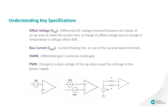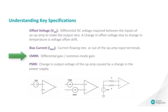There are a few specifications that are very important for precision applications. Offset voltage is the differential DC voltage which, when applied between the op-amp inputs, will make the output zero. A change in offset voltage due to a change in temperature is known as voltage offset drift. Bias current is the current flowing into or out of the op-amp input terminals. Common mode rejection ratio, or CMRR, is the ratio of the differential gain to the common mode gain. And power supply rejection ratio, or PSRR, is the change in output voltage caused by a change in the power supply.